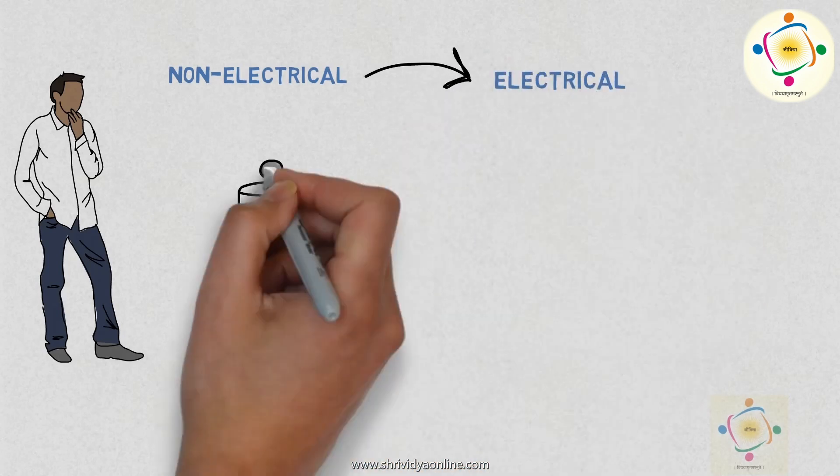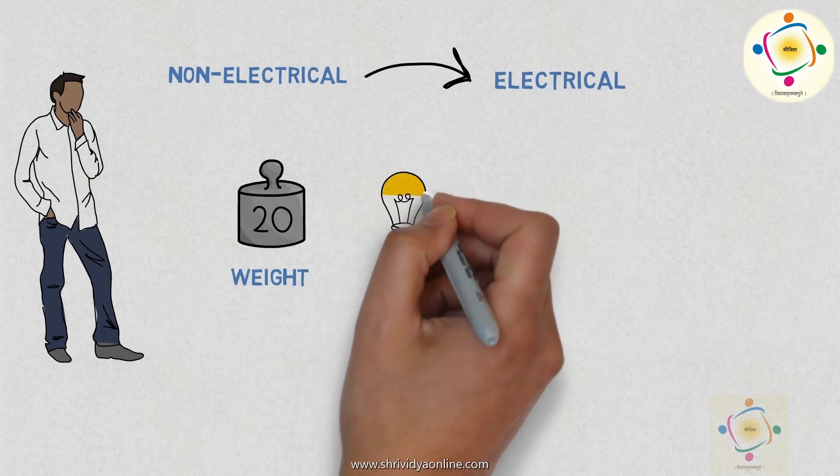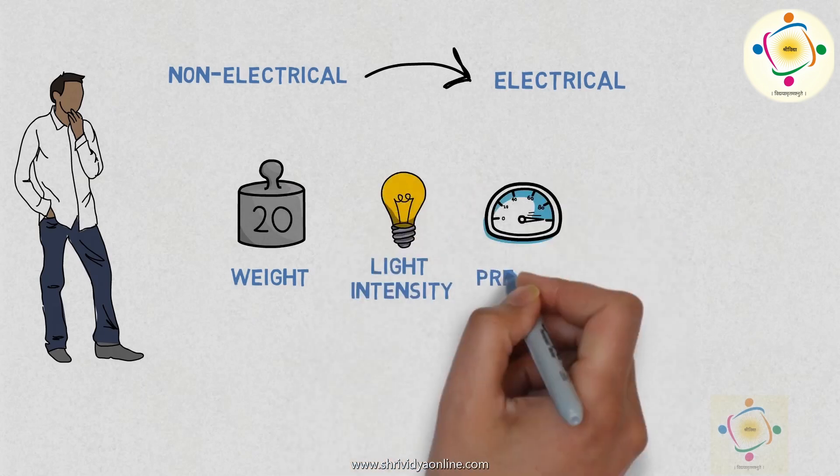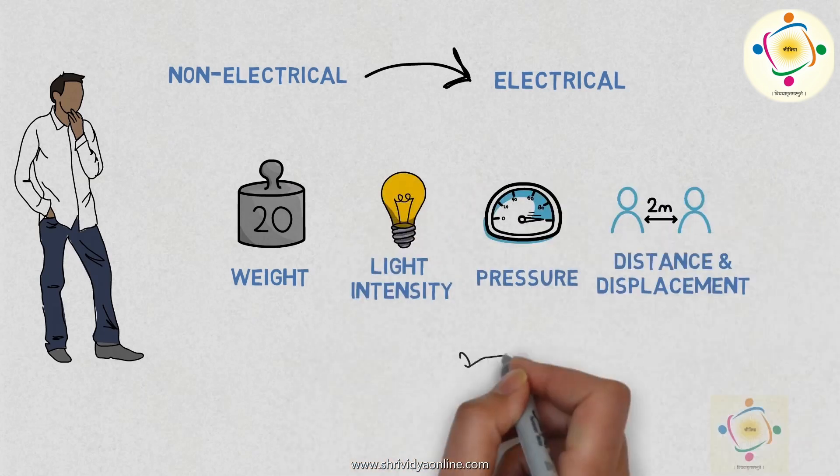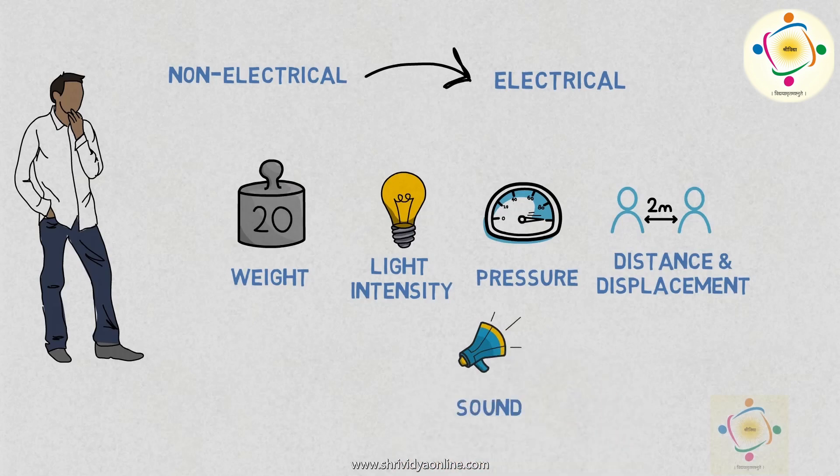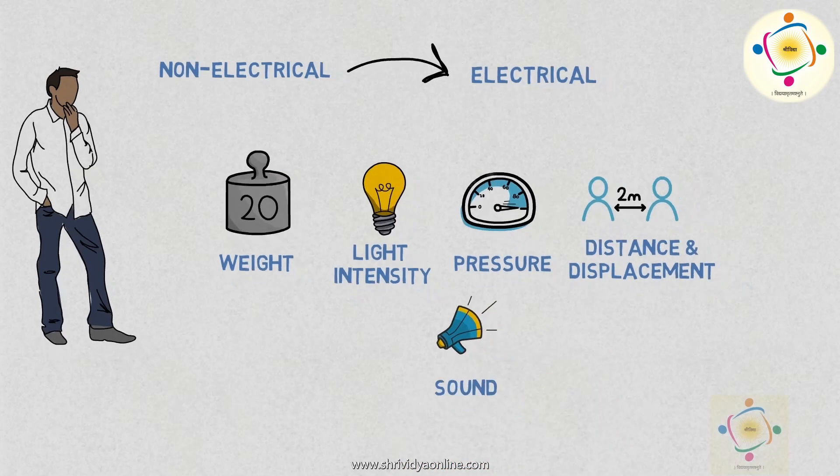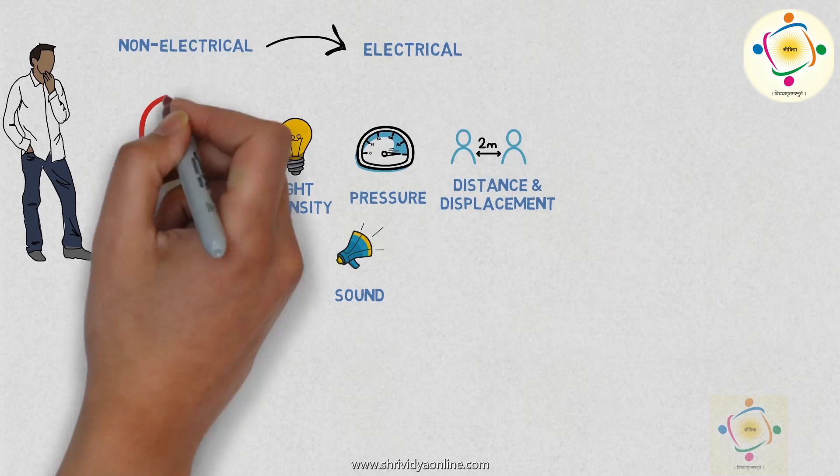There are so many other physical quantities like weight, intensity, pressure, distance, displacement, sound where we use electronic instruments for measurement.